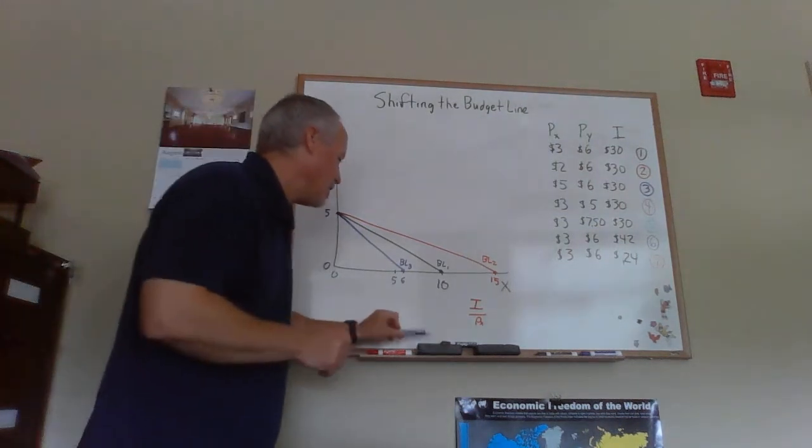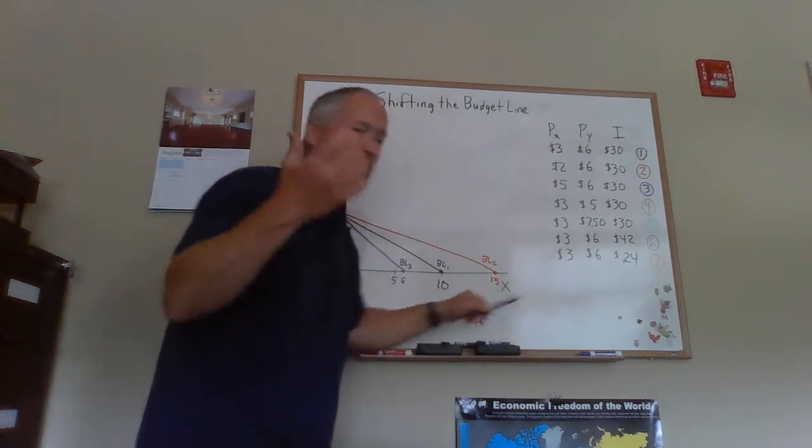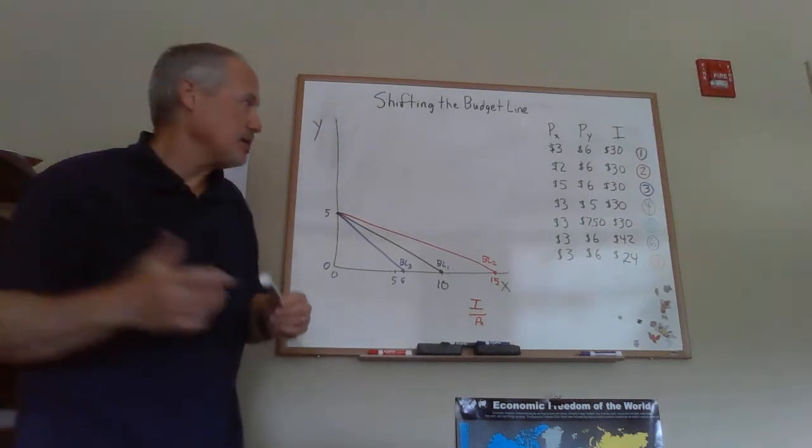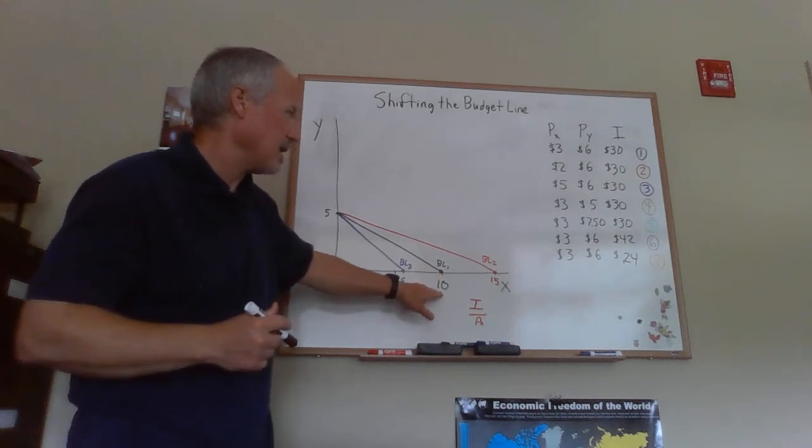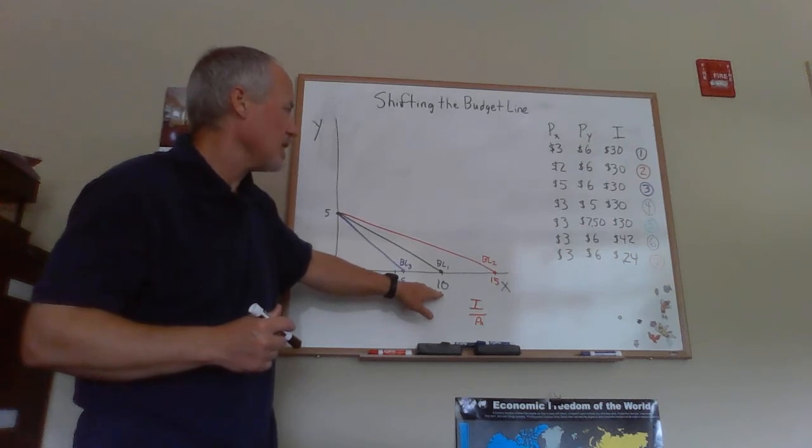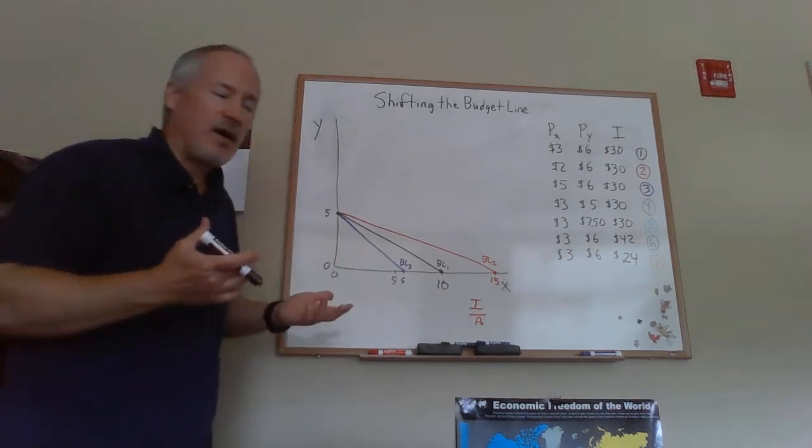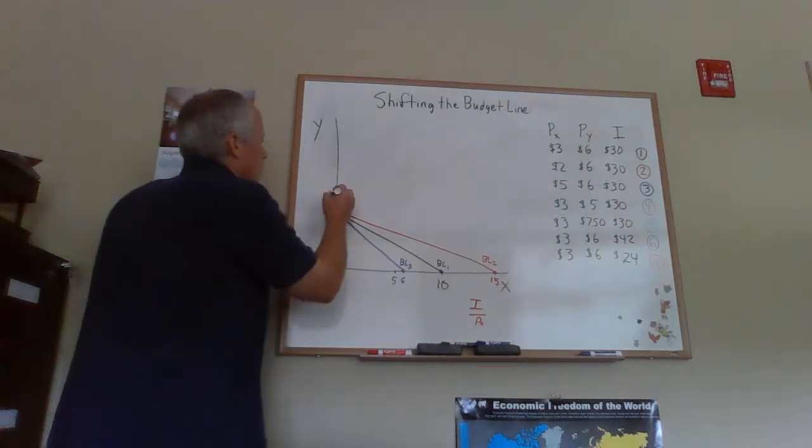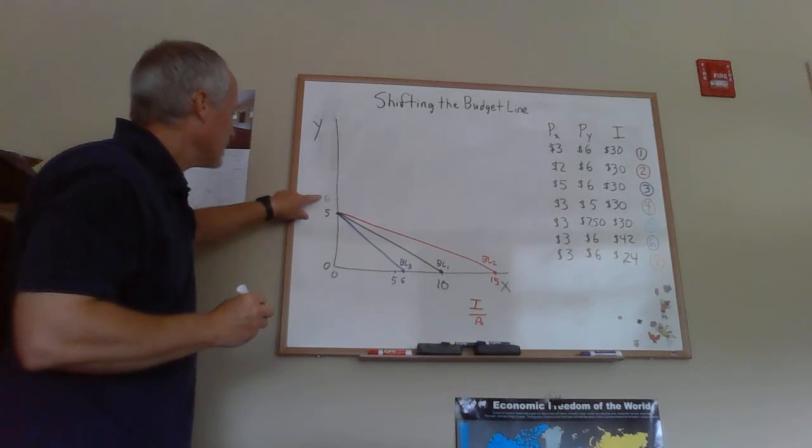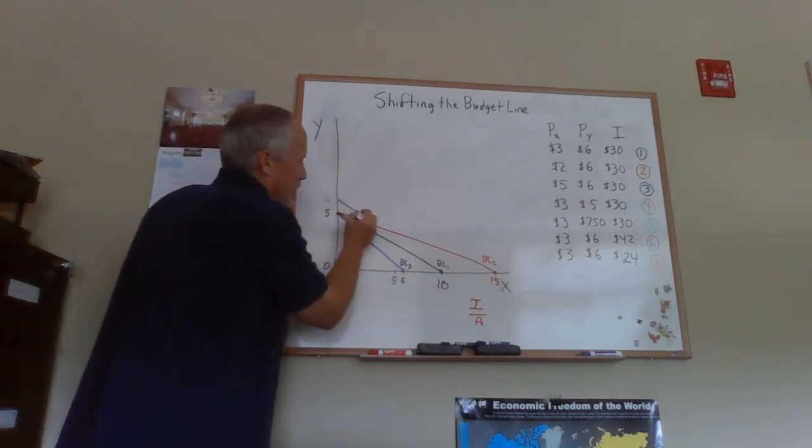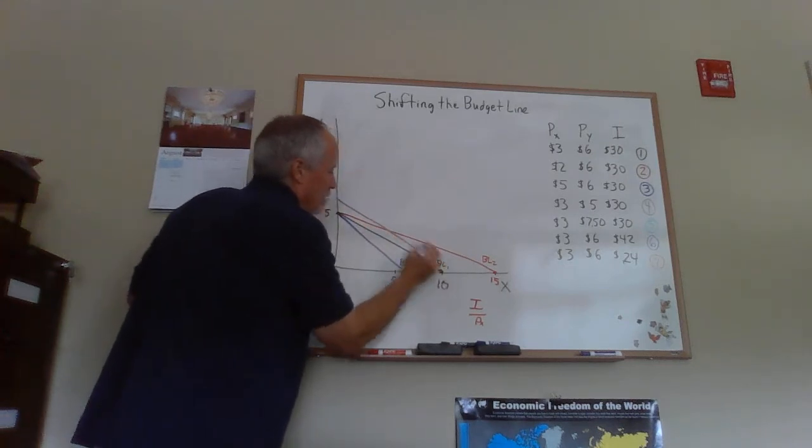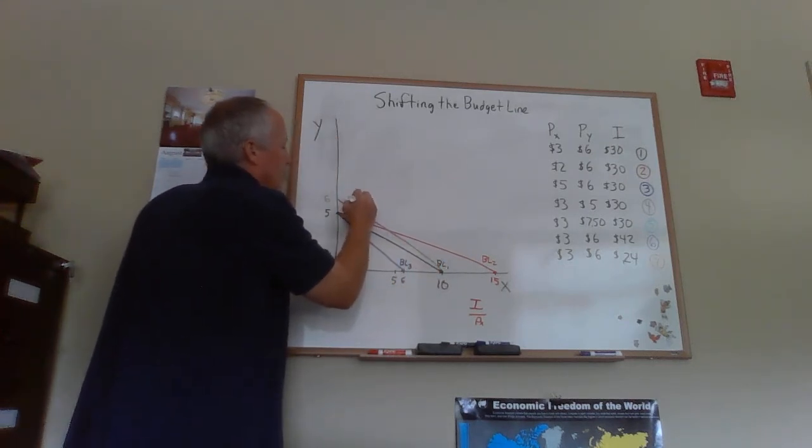Now let's go to budget line number four. We're going to reset the price of X to $3 and income is still $30, so we're going to have 10 for our X axis intercept. Then we lowered the price of Y from $6 to $5. 30 divided by 5 is 6, so the Y axis intercept would now be 6. We've got 10 for our X axis intercept, and we'll draw this in. This will be BL4.